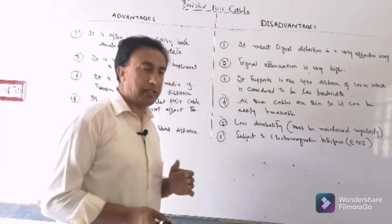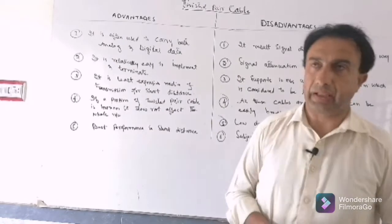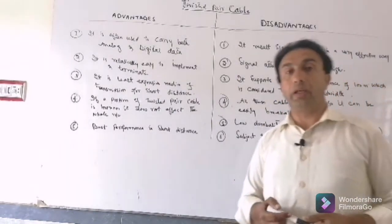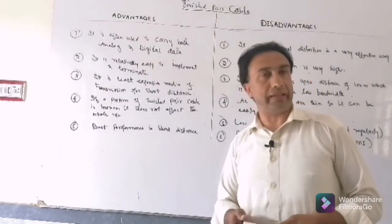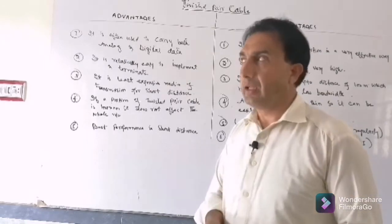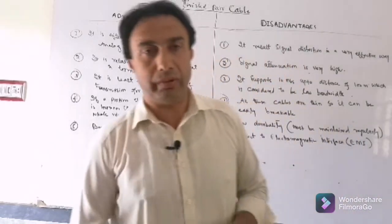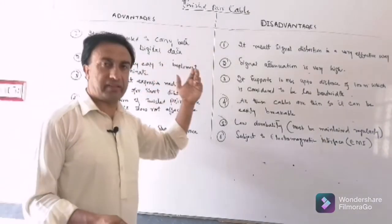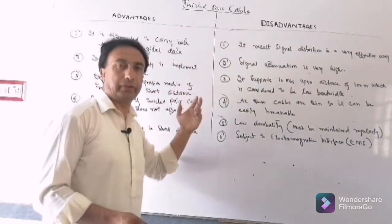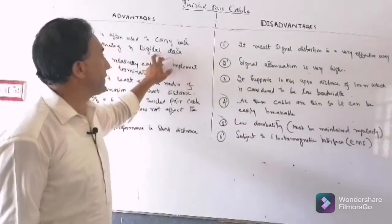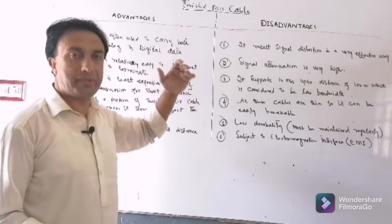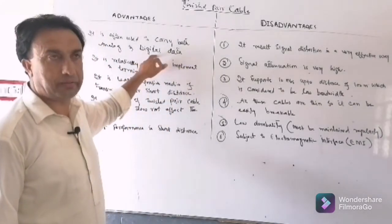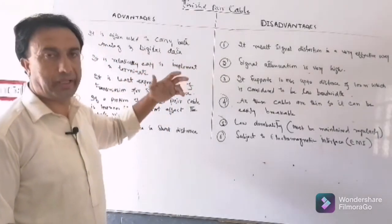The first advantage of the twisted pair cable is that it carries both analog data as well as digital data. Data in the form of signal, or data in the form of binary bits that is 0 and 1. So it can carry both analog and digital data.